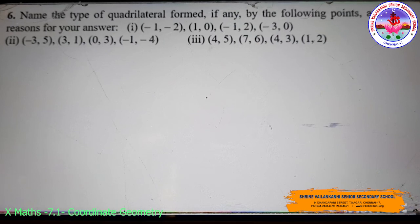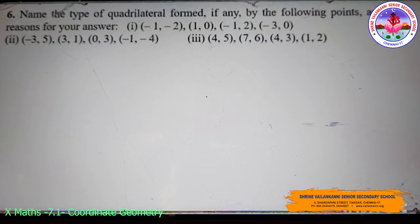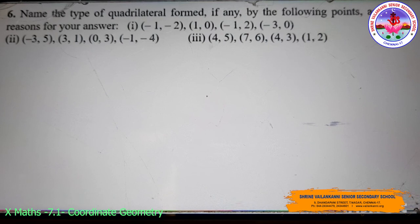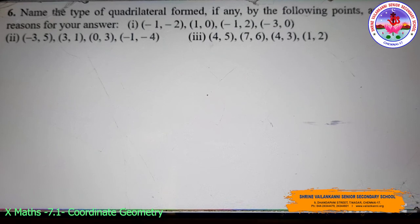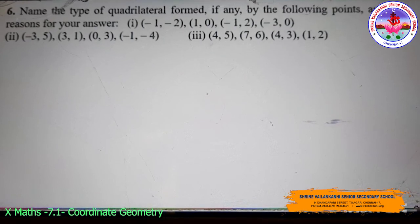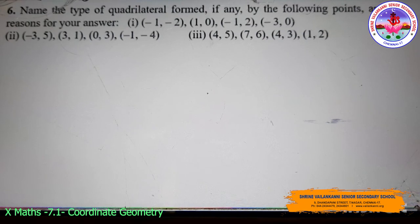The second subdivision gives points (-3, 5), (3, 1), (0, 3), and (-1, -4). The third subdivision gives points (4, 5), (7, 6), (4, 3), and (1, 2).